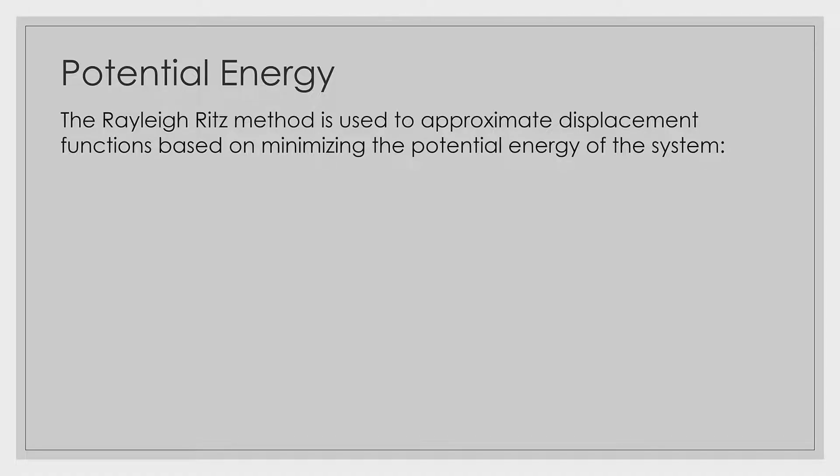The key to this unit is going to be potential energy. The Rayleigh-Ritz method is used to approximate displacement functions based on minimizing the potential energy of the system. The potential energy of a system is simply the total strain energy of the system minus the work done on the system by external forces.